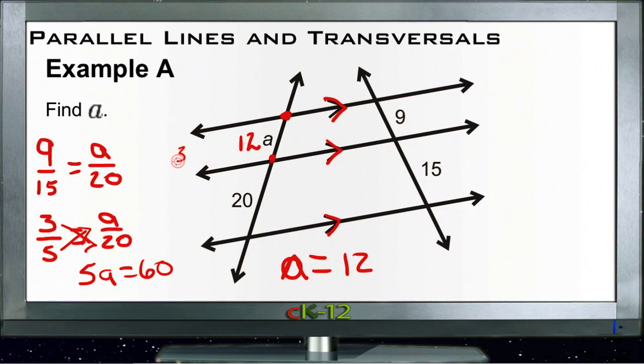This is three fours, three times four, and this is five fours, five times four, whereas this one is three threes, three times three, and five threes, five times three. So three to five and three to five. Yeah, alright.